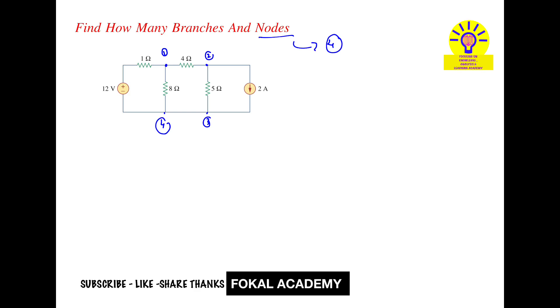Now we can easily find branches. The connection between the nodes is called a branch. Between node one to node four, this is one branch. There is no current division in this branch. So it is one. Next, between node one to node four, this is another branch. That is the eight ohms resistor. This is the second branch.